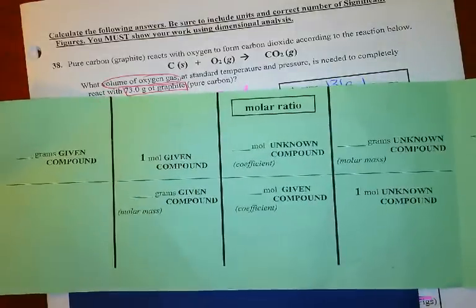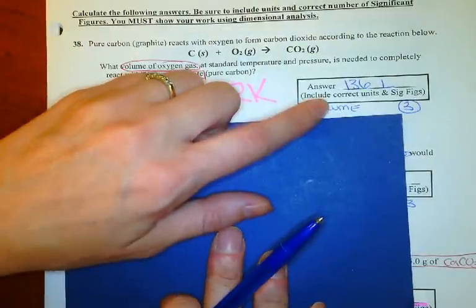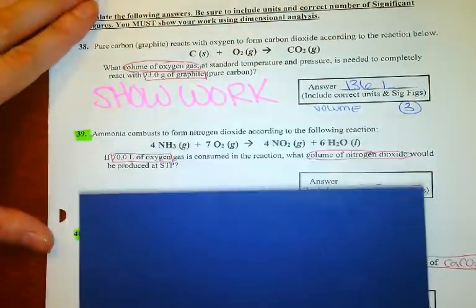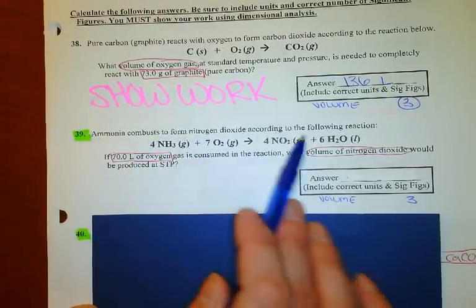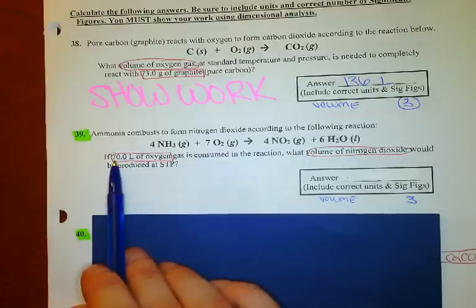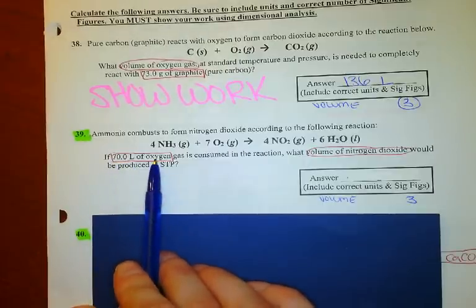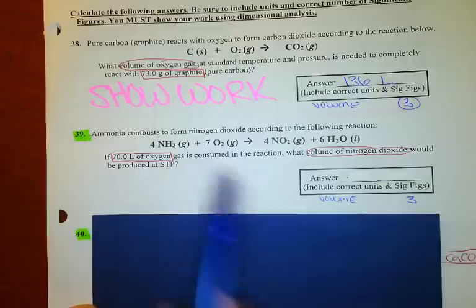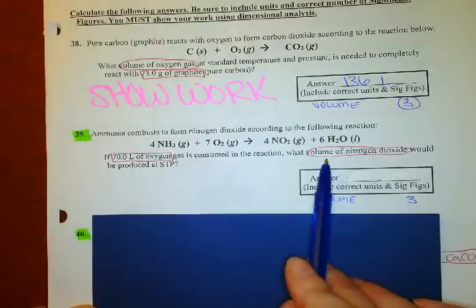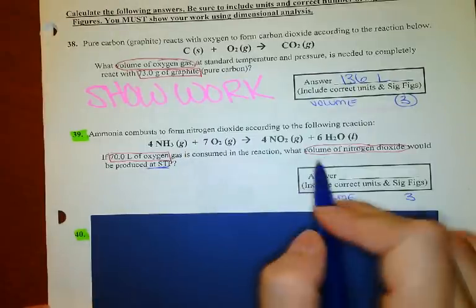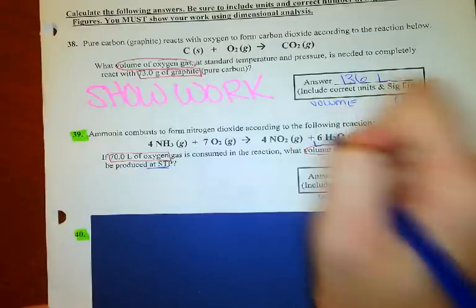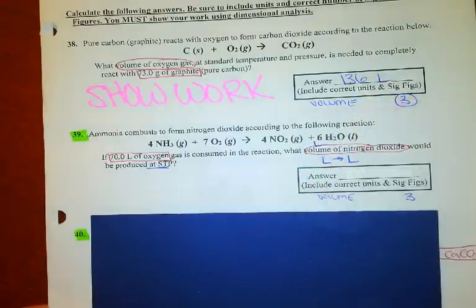We're going to give you this foldable because we want you to apply the new stuff to it. Ammonia combusts to form nitrogen dioxide according to the following reaction. If 70 liters of O2 — that's my given, I boxed it in — is consumed in this reaction, what volume of nitrogen dioxide would be produced at STP? STP just gives you permission to do stoichiometry on this, and volume means liters — so this is going from liters to liters.